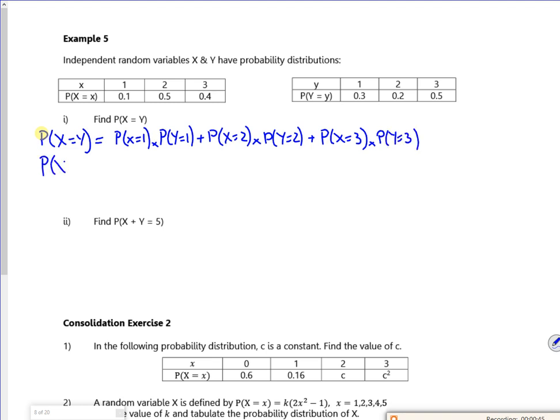So the probability that x is equal to y, so it's the same number for each one, is 0.1 times 0.3, 0.5 times 0.2, 0.4 times 0.5. So the probability that x is equal to y comes out as about 0.32, I think.